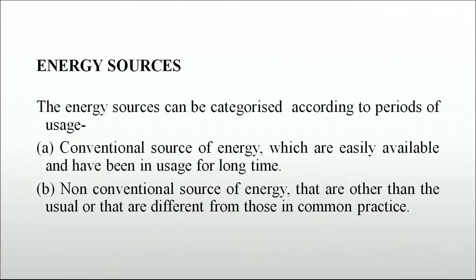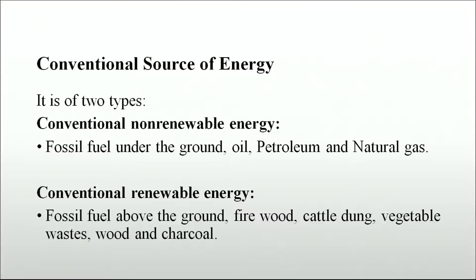Energy sources can be categorized according to periods of usage, which can be conventional sources of energy — easily available and in usage for a long time — or non-conventional sources of energy that are different from those in common practice. Conventional sources are of two types: conventional non-renewable energy, which includes fossil fuels underground like oil, petroleum and natural gas; and unconventional renewable energy sources, which include fossil fuels above the ground like firewood, cattle dung, vegetable waste, wood and charcoal.